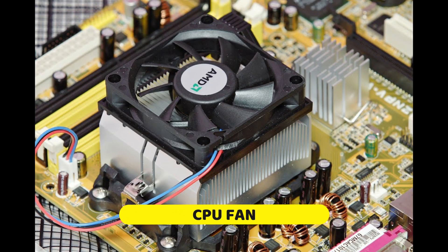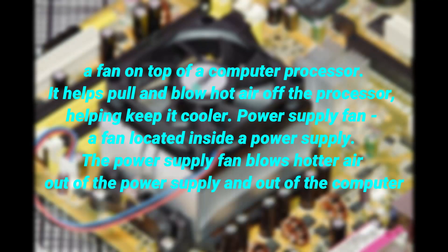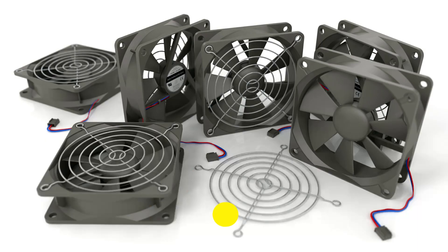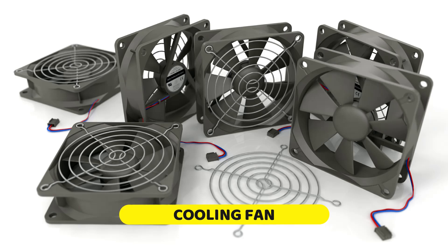What is a CPU fan? A CPU fan is a fan on top of a computer processor that helps pull and blow hot air off the processor, helping keep it cooler. What is a power supply fan? A power supply fan is a fan located in a power supply that blows hot air out of the power supply and out of the computer.